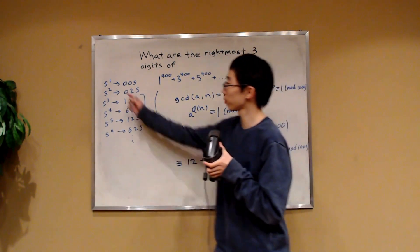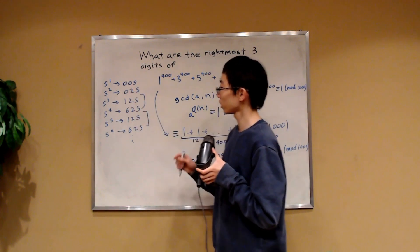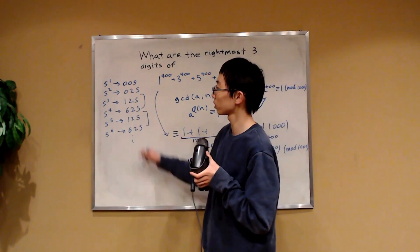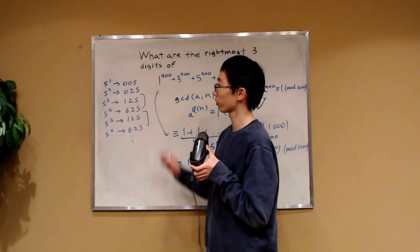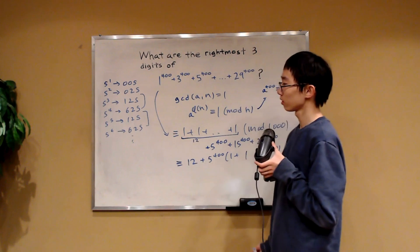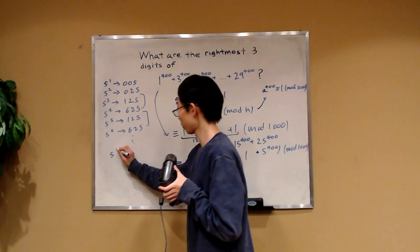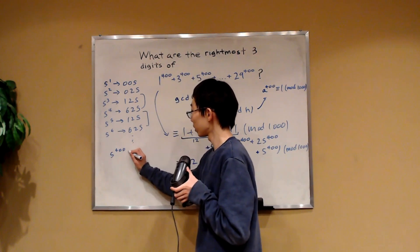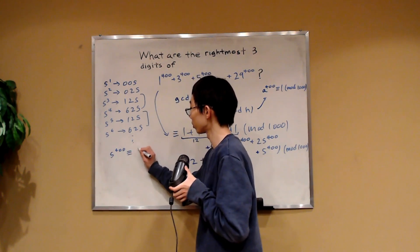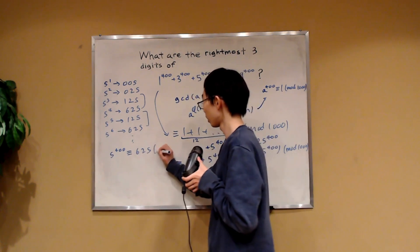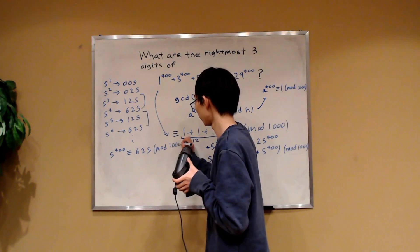So therefore we've deduced that 5 to the 400 therefore is going to be congruent to 625 mod 1,000, because the last three digits repeat in a pattern.